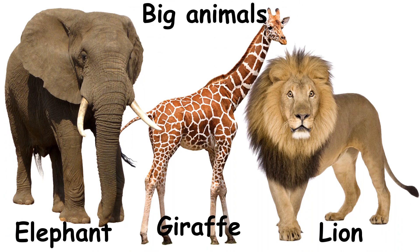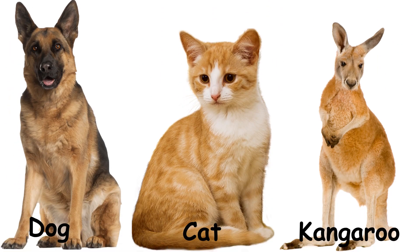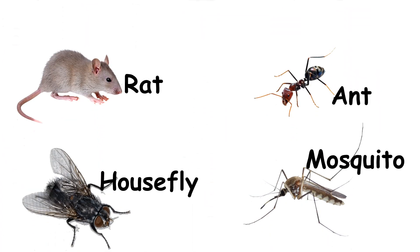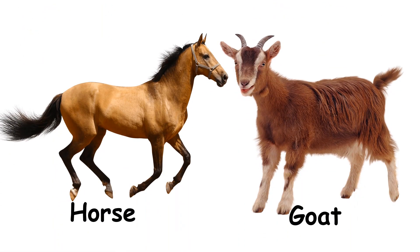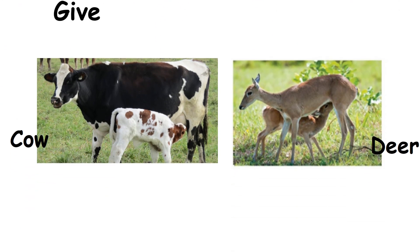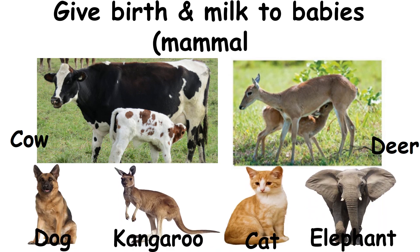Some animals are big, some not so big, and some animals are small in size. Some animals have fur on their body. Some animals give birth to young ones and give milk. They are called mammals.